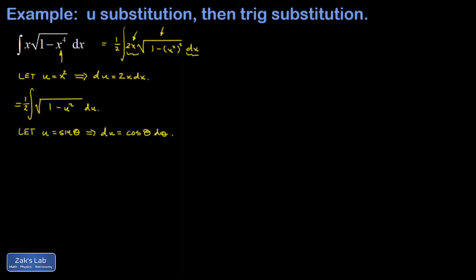If I let u equal sine θ, I can take advantage of a Pythagorean identity to simplify the interior. One extra thing I want to do at this point — because I know I'll need it at the end — is solve for θ. I know at the end this integral will be in terms of θ and I have to get all the way back to x's, so θ is arcsin(u), but u is x-squared, and we'll save that for later.